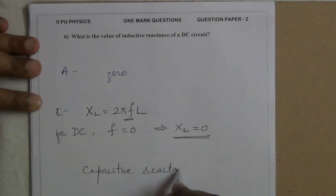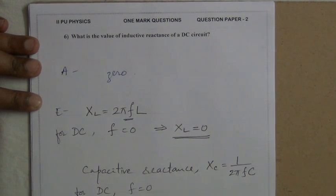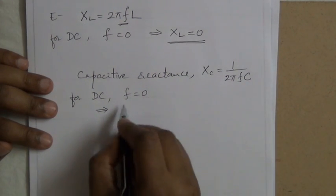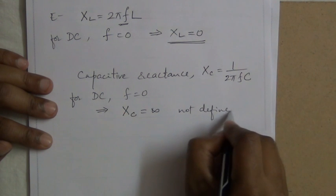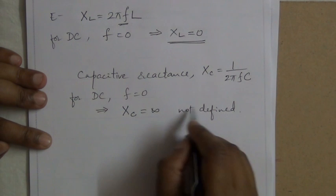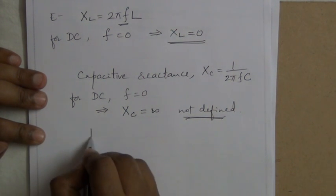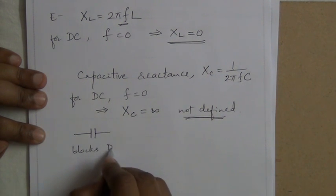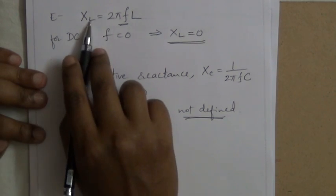Capacitive reactance Xc = 1/(2πfC). For a DC circuit, frequency f = 0, which implies capacitive reactance is equal to infinity — meaning it is not defined. It is a very large number; more appropriately, it is not defined. For this reason, a capacitor blocks DC because it offers very high opposition, whereas XL equals zero.